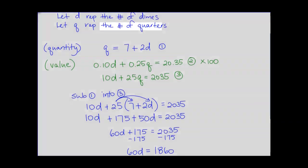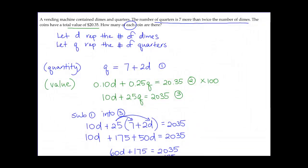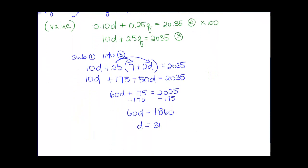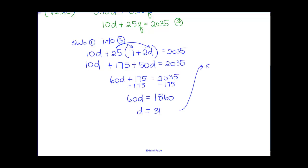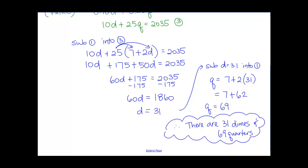We're not done yet because the question asks for how many of each coin. Now that we know there are 31 dimes, we still need to find the number of quarters. Substituting d equals 31 back into equation one: q equals 7 plus 2 times 31, which gives us 69 quarters. Therefore, there are 31 dimes and 69 quarters. You can verify this gives a total value of $20.35.